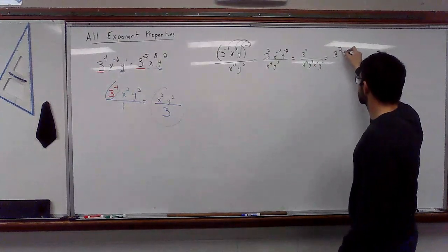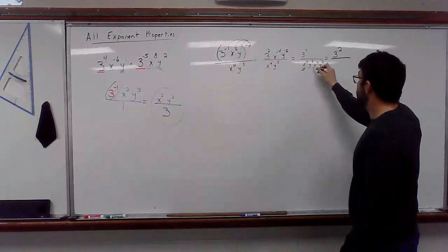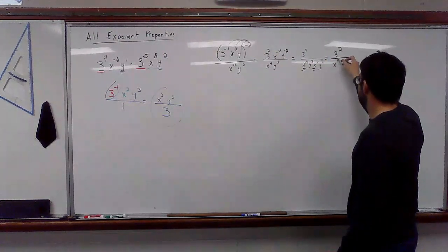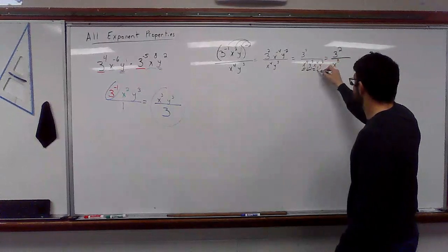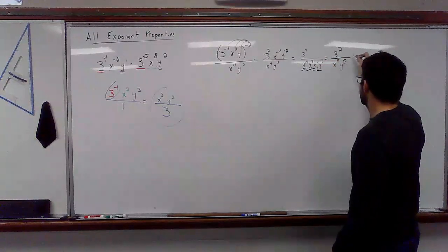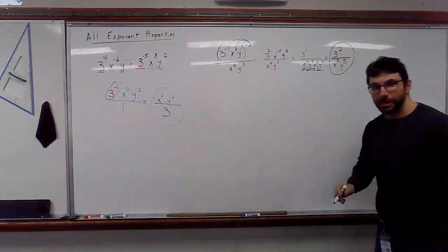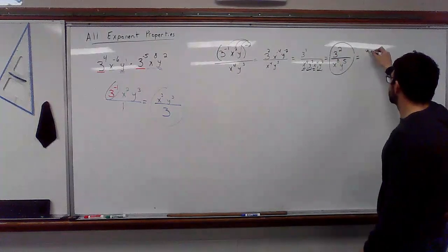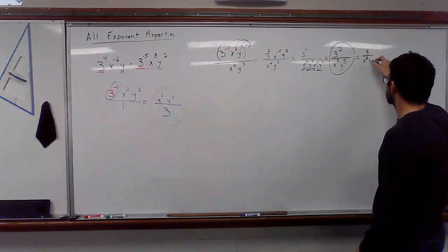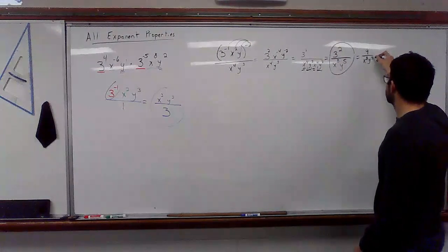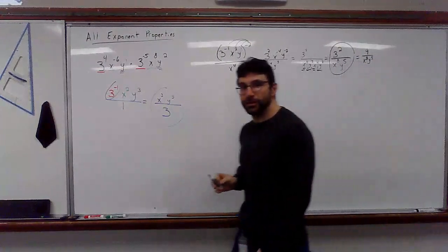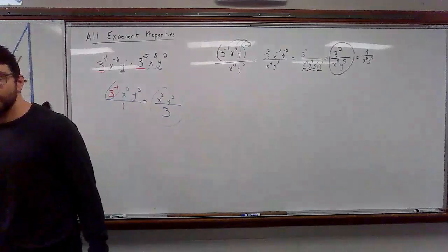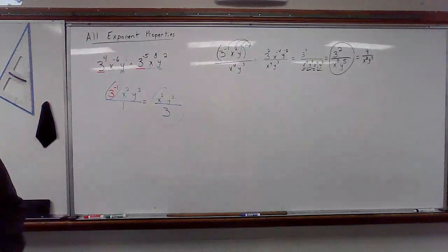Okay. So, three squared stays. Like bases, add the exponents. Like bases, add the exponents. Can I simplify this to nine divided by x to the eighth, y to the fifth? Yes. But right now, I want you focusing on knowing how to do combining of the exponents.